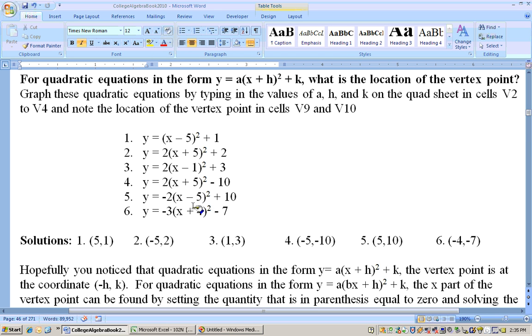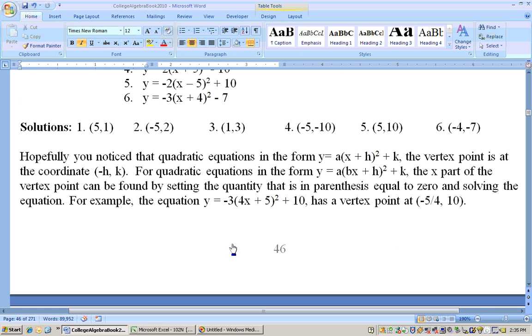Negative 5, negative 10, 5, 10, and negative 4, negative 7. Now, if the leading coefficient is positive, the parabola is going to open upward, and if the leading coefficient is negative, the parabola opens downward.